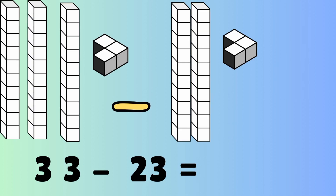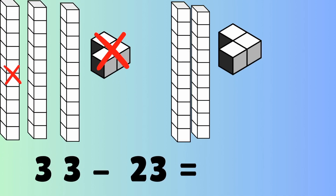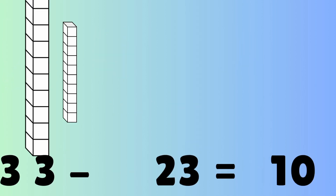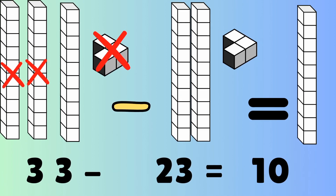Next up, thirty-three minus twenty-three. You got three blocks of ten plus three little cubes minus twenty-three — two blocks of ten and three little cubes. So if we mark that off on the left, what does that leave? It only leaves one block of ten. So thirty-three minus twenty-three is ten.